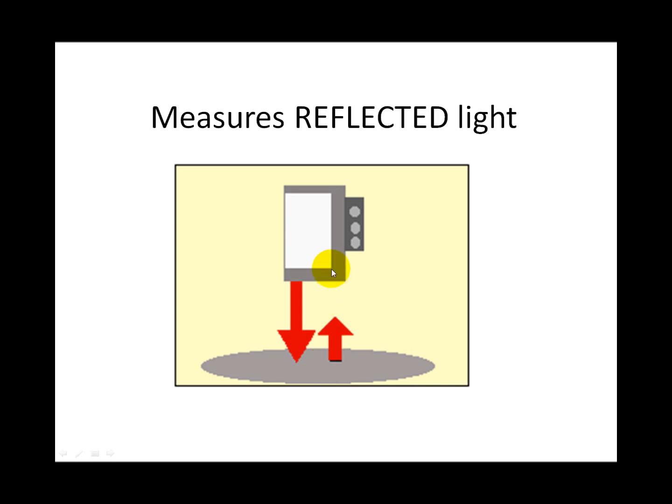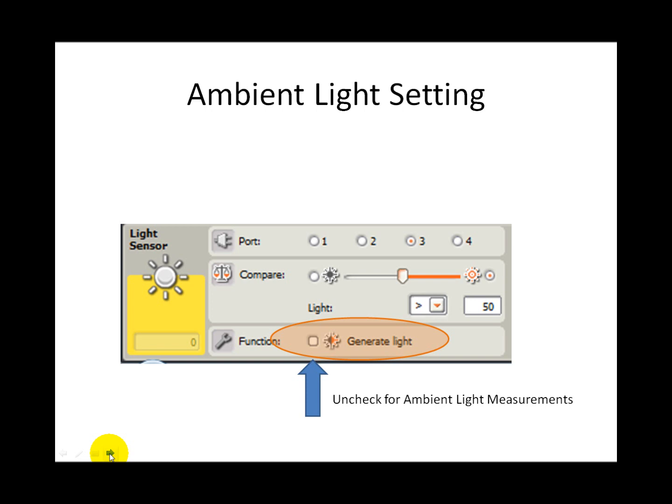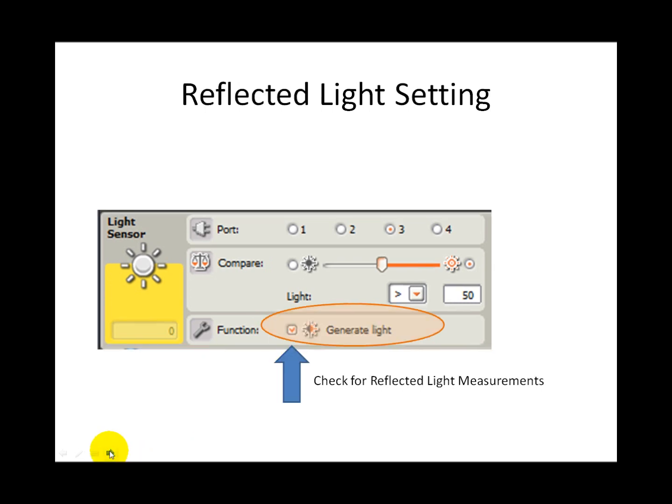If you are going to measure ambient light, be sure to uncheck the generate light box in the configuration panel. But for measuring reflected light, you will need this box to remain checked.